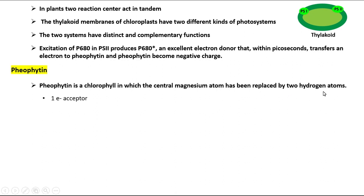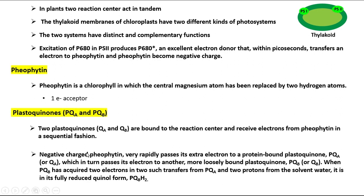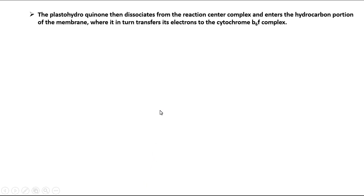Two plastoquinones, PQA and PQB, are bound to the reaction center and receive electrons from pheophytin sequentially. Negatively charged pheophytin rapidly passes its extra electron to protein-bound plastoquinone PQA, which in turn passes its electron to more loosely bound plastoquinone PQB. When PQB has acquired two electrons from PQA and two protons from the solvent water, it is in its fully reduced quinol form, PQBH2.